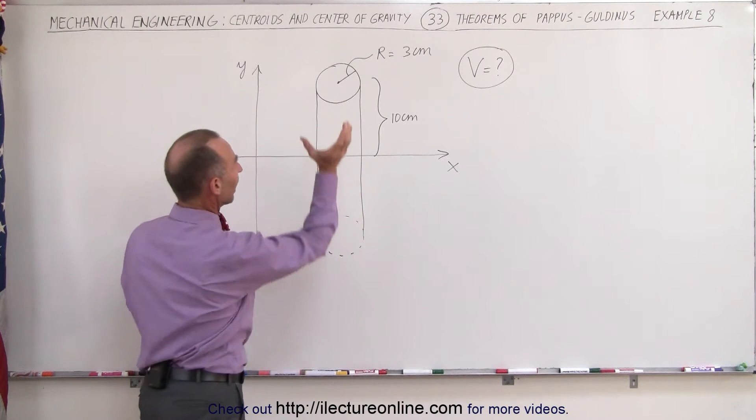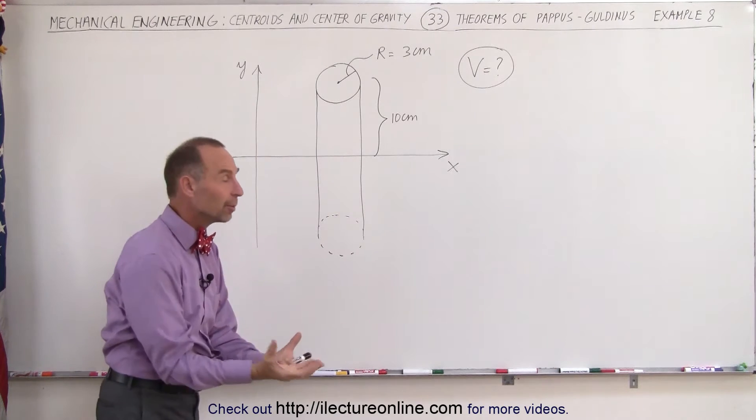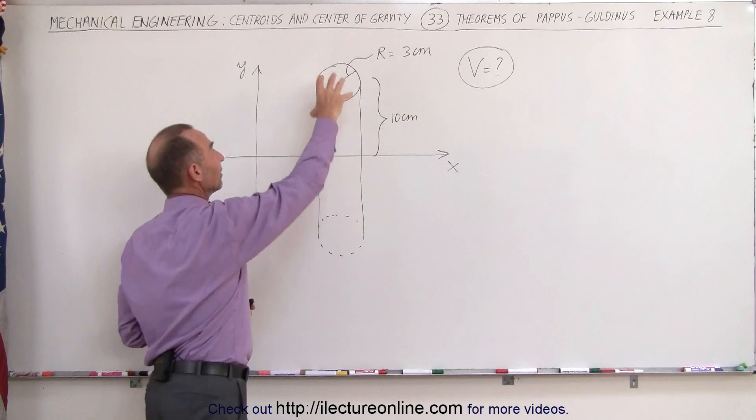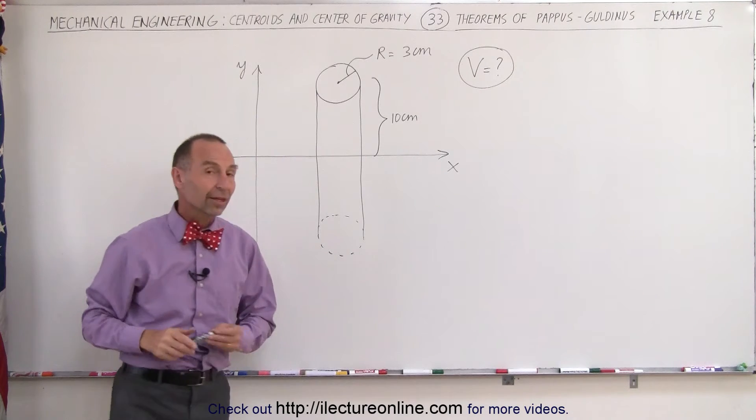This is the cross-section of that. There's the back end of the donut. Here would be the front end of the donut. And we're trying to find the volume of that donut when we take this area and revolve it around the x-axis using that theorem.